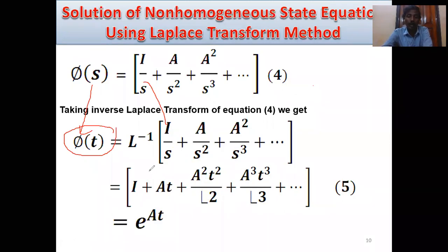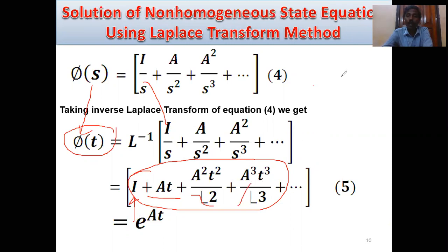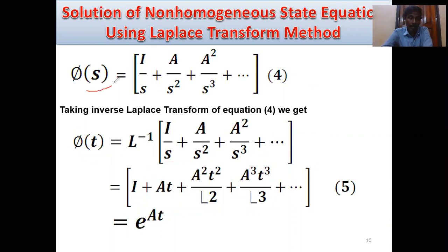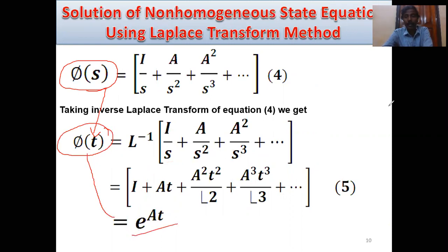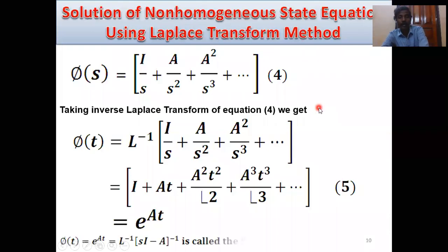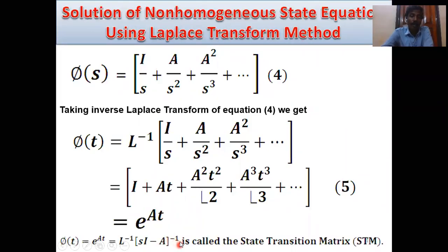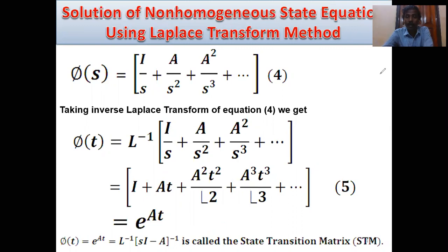This is equivalent to e^(AT), since e^(AT) = I + AT + A²T²/2! + A³T³/3! + .... So Φ(S) is the resolvent matrix, and after inverse Laplace transformation, Φ(T) = e^(AT) = L⁻¹{(SI − A)⁻¹} = L⁻¹{Φ(S)}. Φ(T) is called the state transition matrix, where Φ(T) ≡ e^(AT).